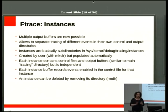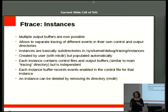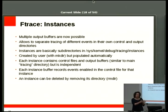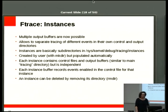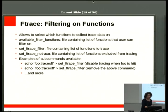Instances allow you to channel tracing data into different subdirectories. Under the tracing directory there's an 'instances' subdirectory that is almost a duplicate of the top directory, so you can have different tracing instances running simultaneously, each putting results in its own buffer. They're easy to enable via mkdir and remove via rmdir, which automatically populates or removes the subdirectory.